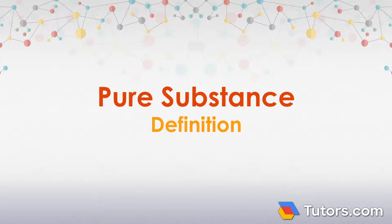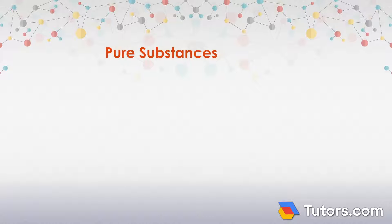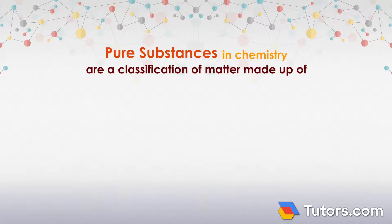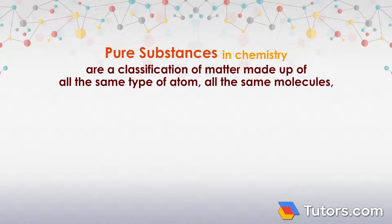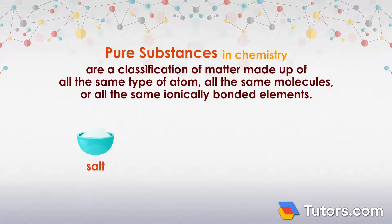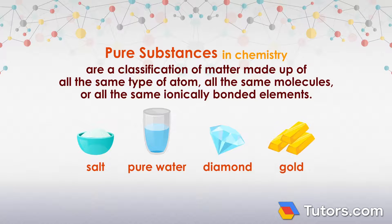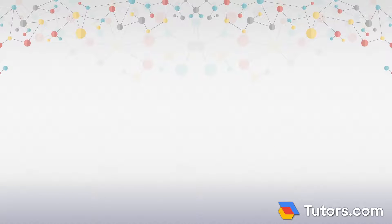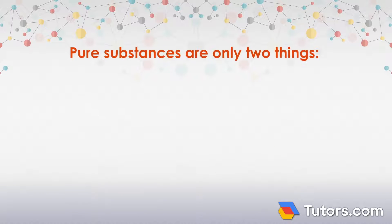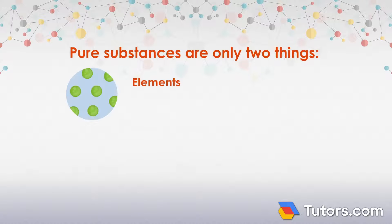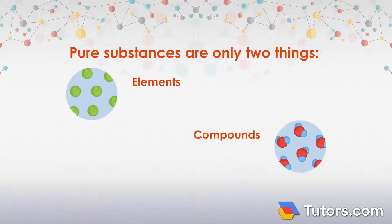Pure substances in chemistry are a classification of matter made up of all the same type of atom, all the same molecules, or all the same ionically bonded elements. In chemistry, pure substances are only two things: elements or compounds.